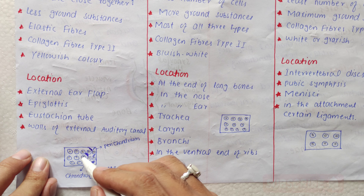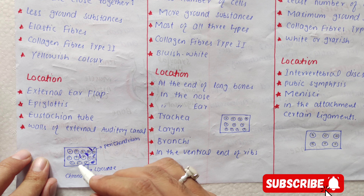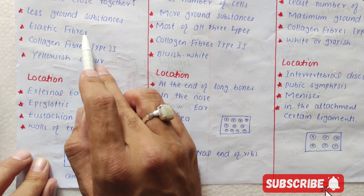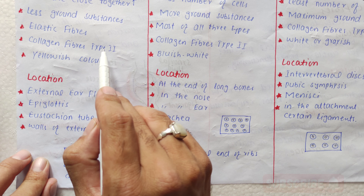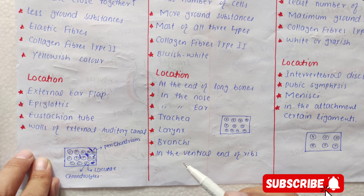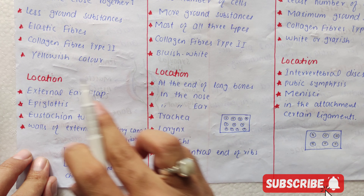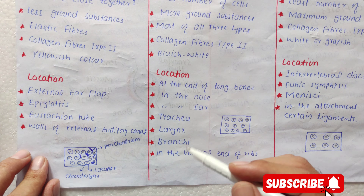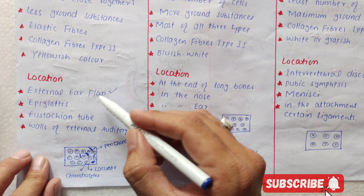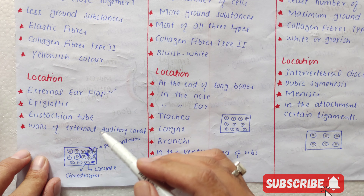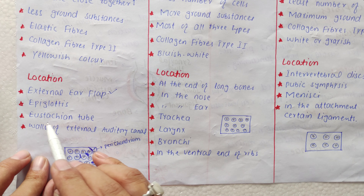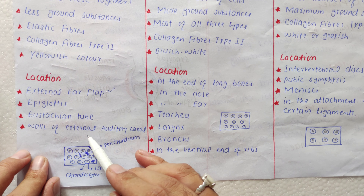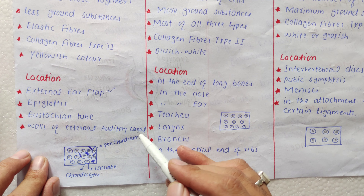Collagen type 2 fiber جو کہ parallel arrange ہے۔ تو اس میں ground substance میں elastic fiber بھی ہے اور collagen fiber type 2 بھی ہے۔ اس کا color yellowish ہے۔ Location کی بات کی جائے تو elastic cartilage، external ear flap میں، epiglottis میں، Eustachian tube میں، اور walls of external auditory canal میں پایا جاتا ہے۔ یہ elastic بھی ہے اور tough بھی ہے۔